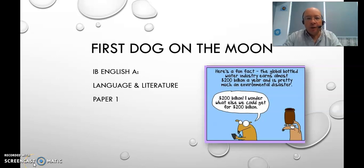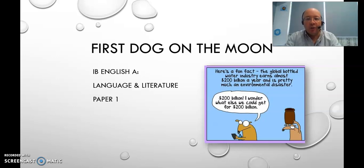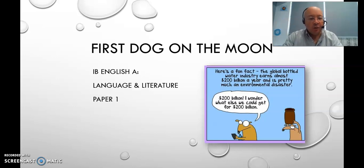Hello everyone. Today we're going to be looking at an IB English A Language and Literature Paper 1 text, and I'm going to be running you through how to plan your answer for Paper 1 and also how to actually deliver that answer. I'll show you a sample answer. This is mainly aimed at language and literature, but if you are doing literature the same kind of planning theory applies, so hopefully this will be useful for you.